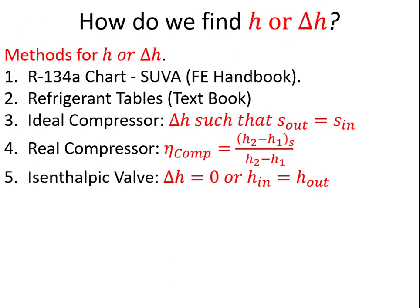How do we find H or delta H? We can look at charts like the one for R134A in the FE handbook. We can look at refrigerant tables in our textbook. We can look for ideal compressors or turbines such that they're isentropic processes where S does not change. We can use isentropic efficiencies for turbines or compressors. Or we can, in this case, look for an isentropic valve where delta H is zero across the valve.